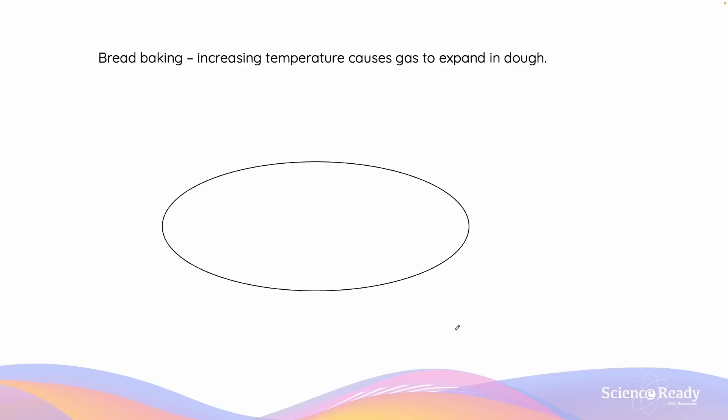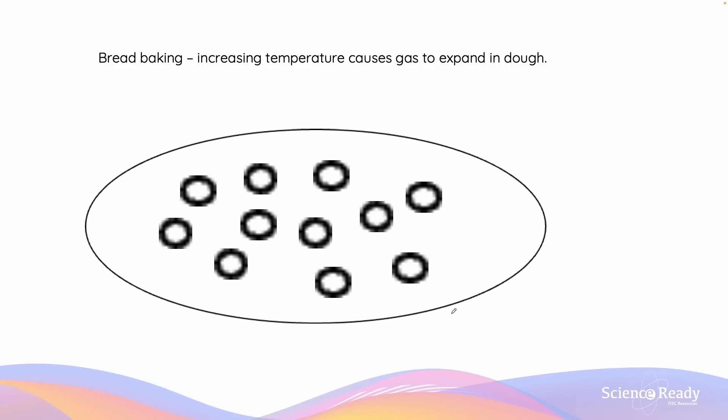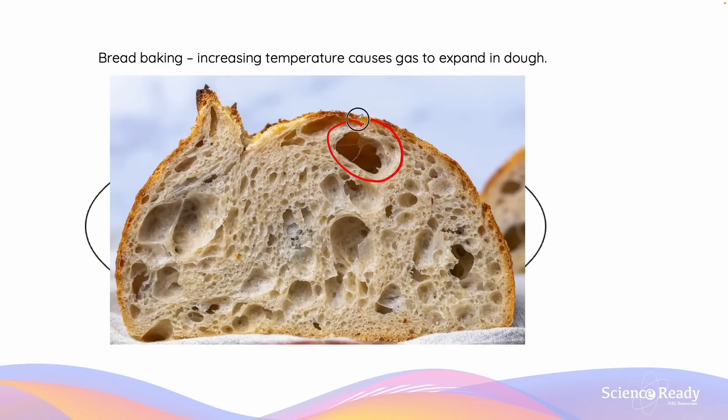Bread baking is another example of how Charles's law is applied in everyday life. When bread is baked, the increase in temperature causes tiny air pockets inside of the bread dough to increase in size and expand. These holes, which are caused by the expansion of gas, can be seen in the cross-section of a slice of bread.